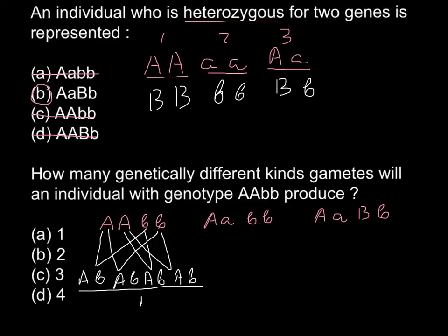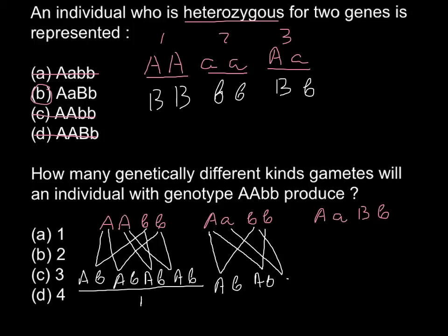With one gene heterozygous and one homozygous, we may have capital A small b and small a small b — two different variants. So that gives us two different gamete combinations.